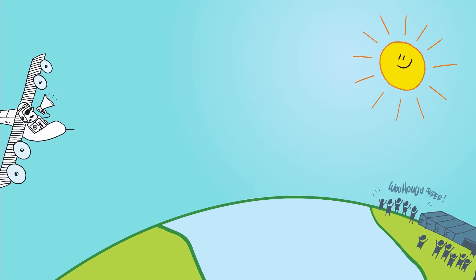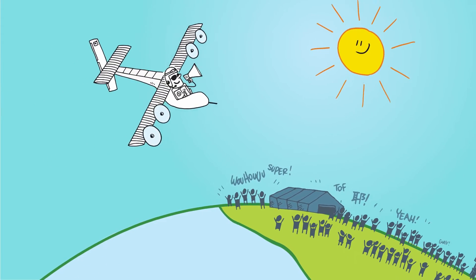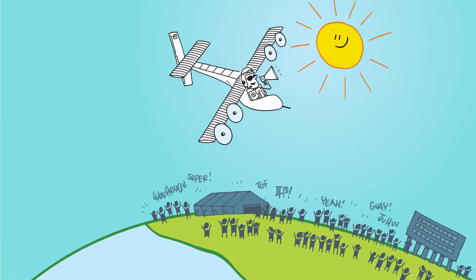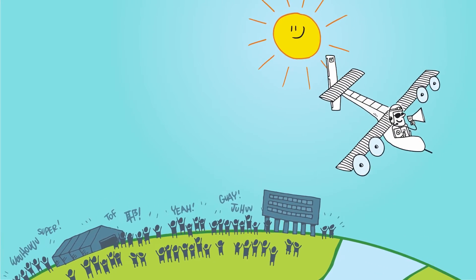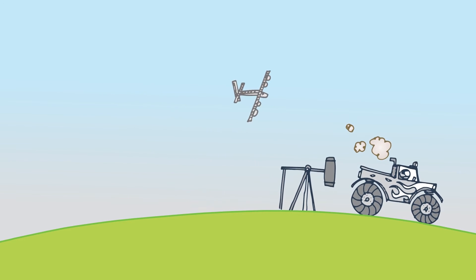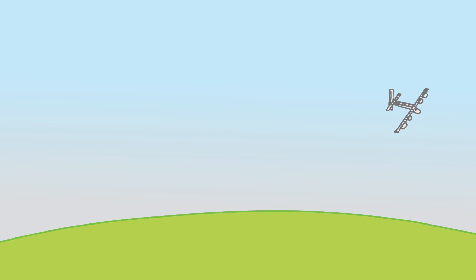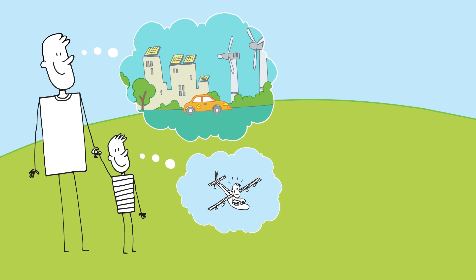By flying around the world, Solar Impulse delivers a strong message to present and future generations. Clean technologies can achieve the impossible in order to fight climate change. Our outdated polluting systems could be replaced by modern, efficient devices. This solar airplane is a ray of hope, inspiring citizens to take concrete actions for tomorrow.